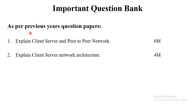As per previous year question papers, there are two most important questions. They sometimes ask: 'Explain client-server and peer-to-peer network for six marks' — where you need to mention what exactly client-server network is, with two advantages and disadvantages, their applications, and a diagram. Or they ask: 'Explain client-server network architecture for four marks.' So you should prepare these two points, which are very easy, and prepare according to your exam.